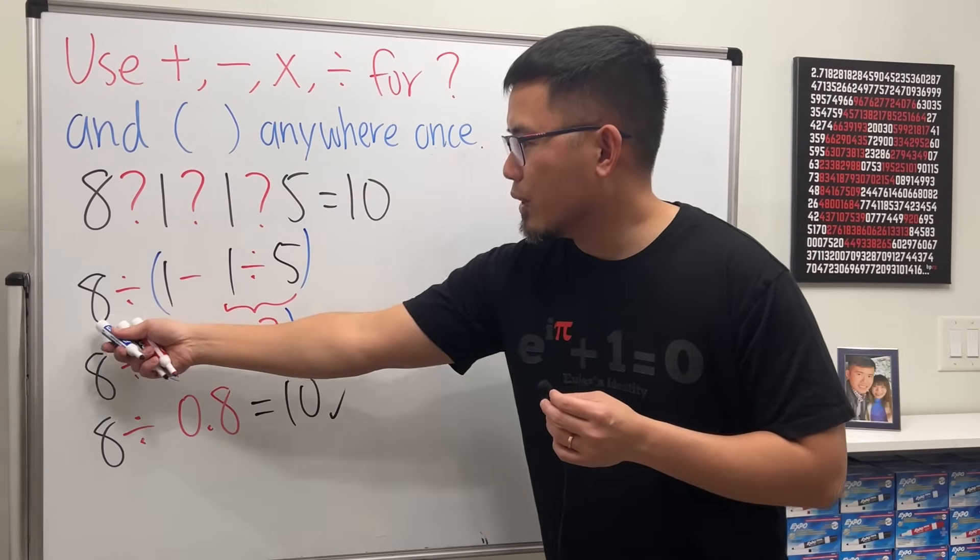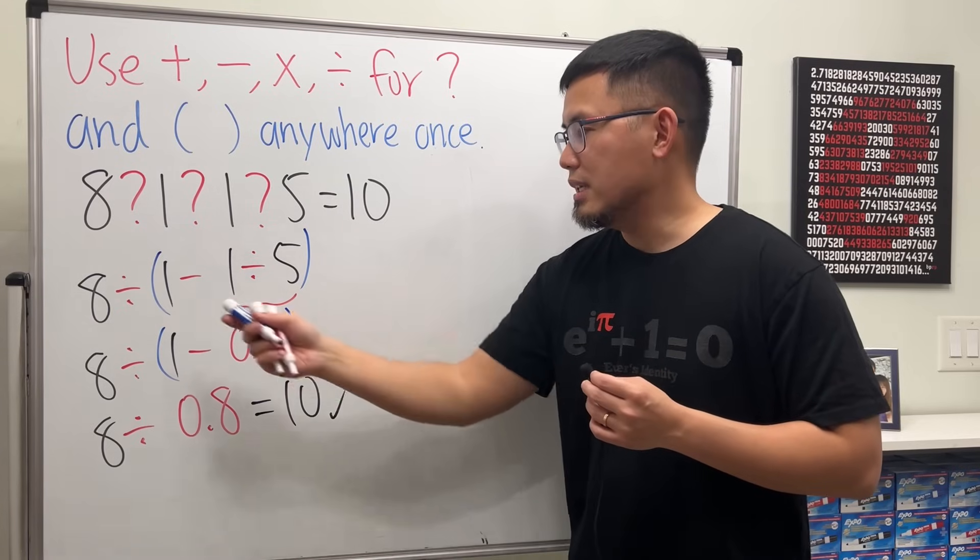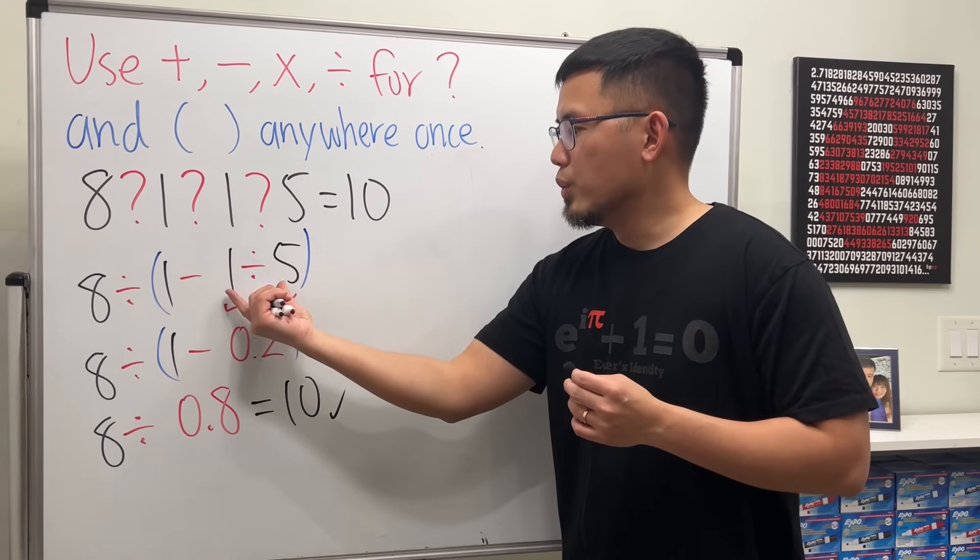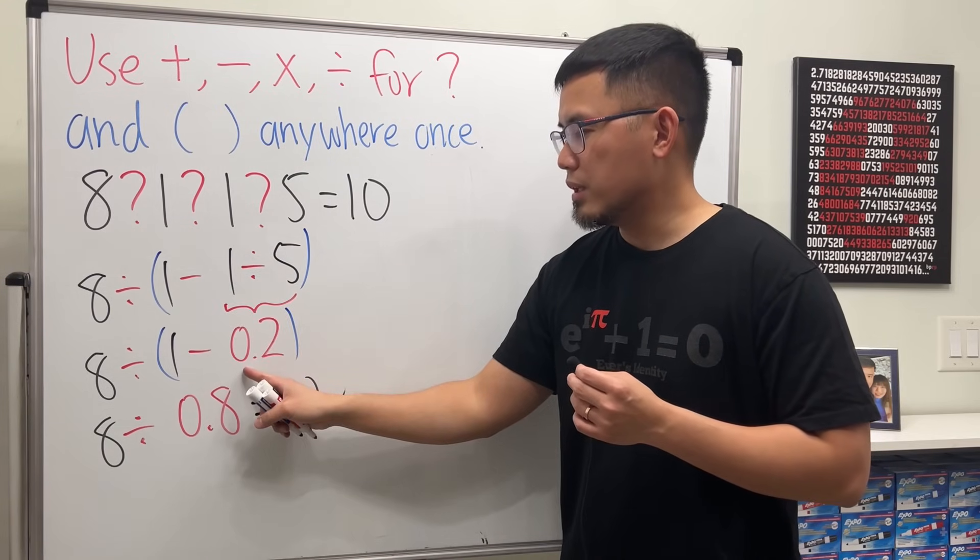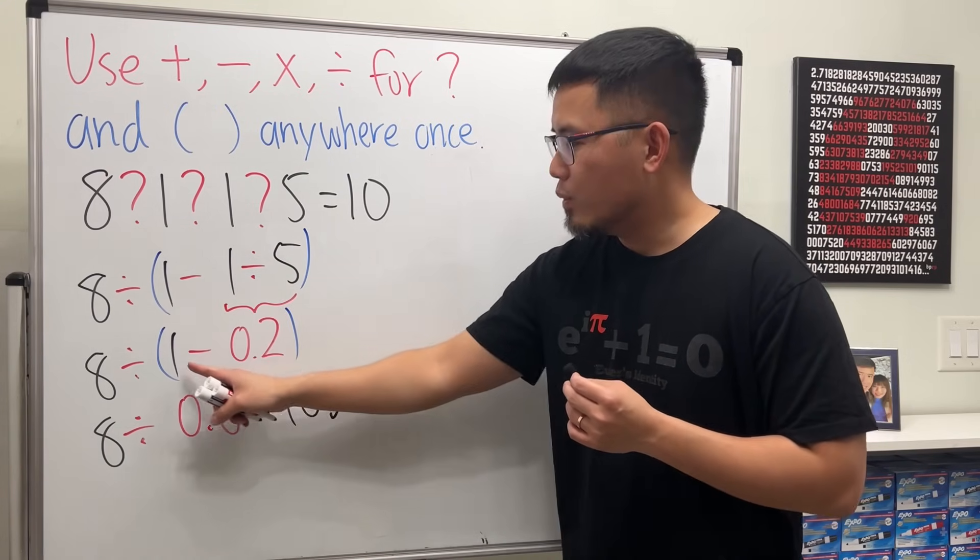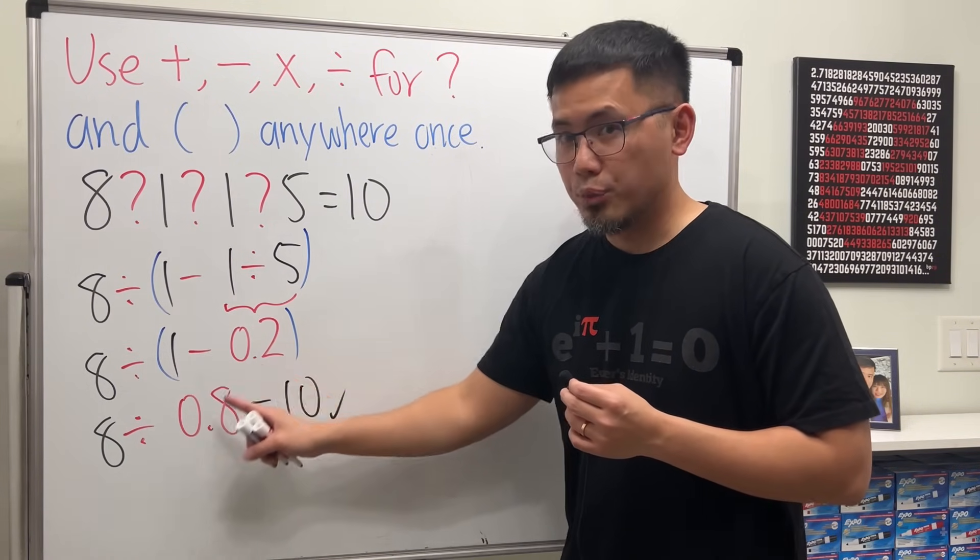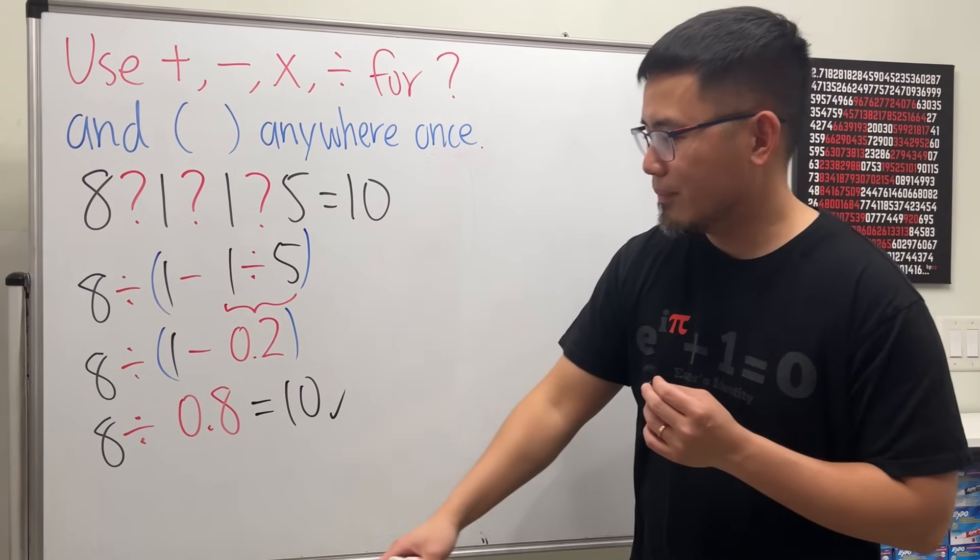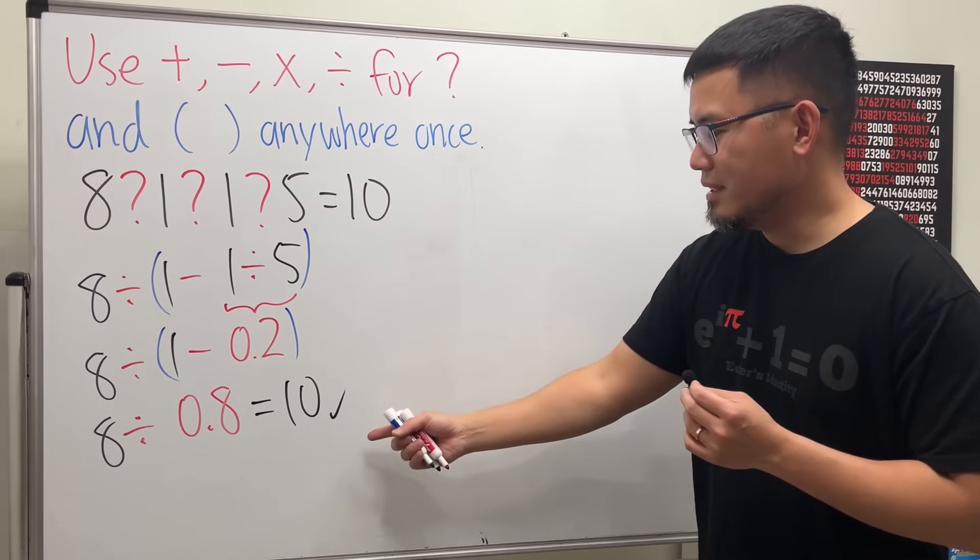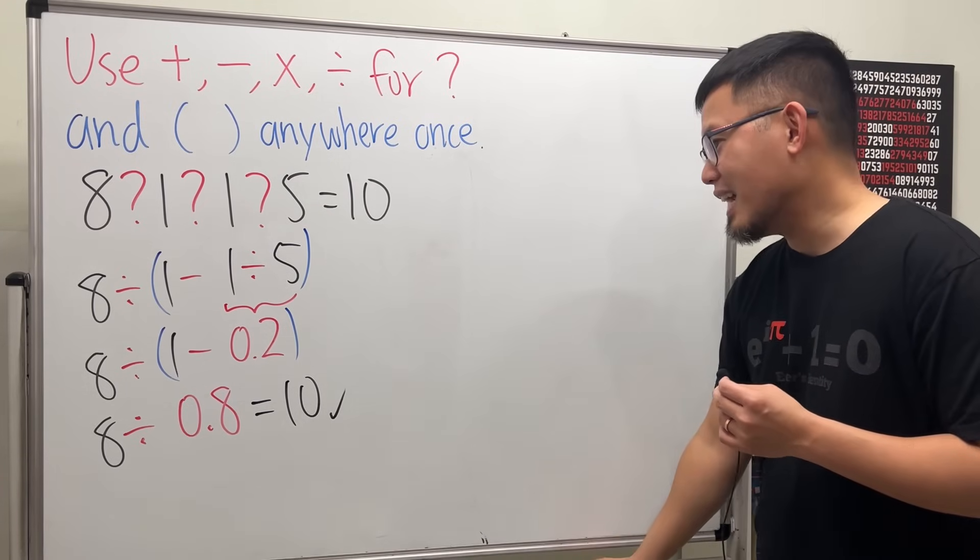Again, have a look. If you write this down, what you do first is inside of the parentheses, you will do 1 divided by 5 first, and you get 0.2. And then 1 minus 0.2 is 0.8. Inside of the parentheses first. And then at the end, 8 divided by 0.8 is 10. And we're done. Just like that.